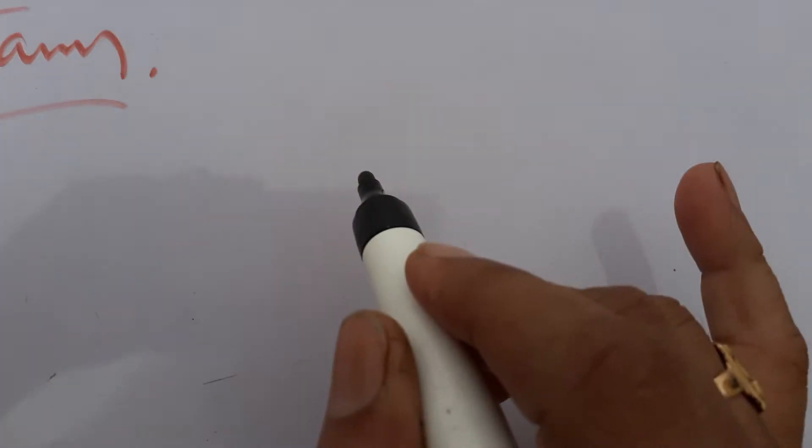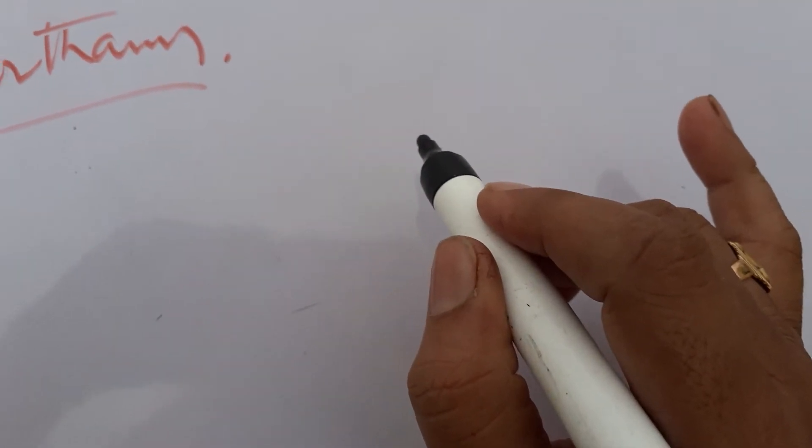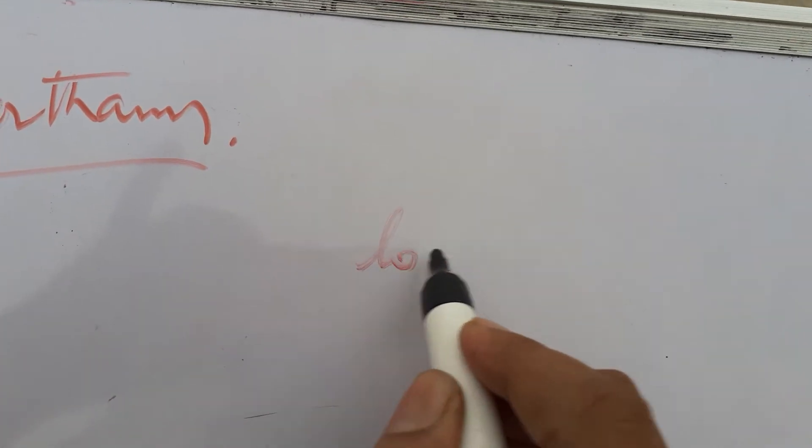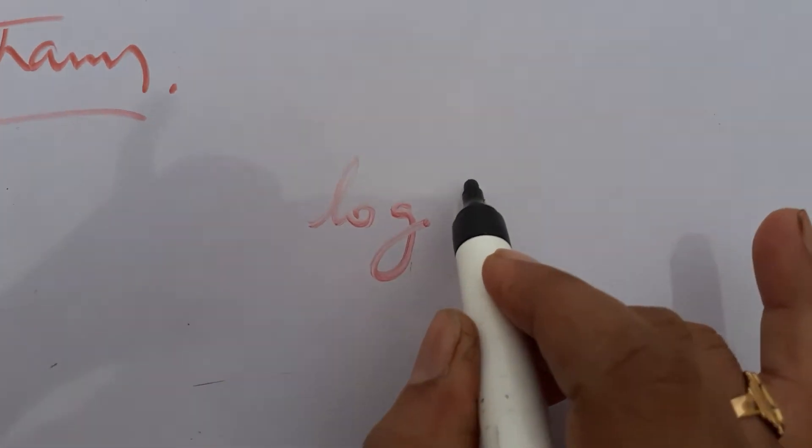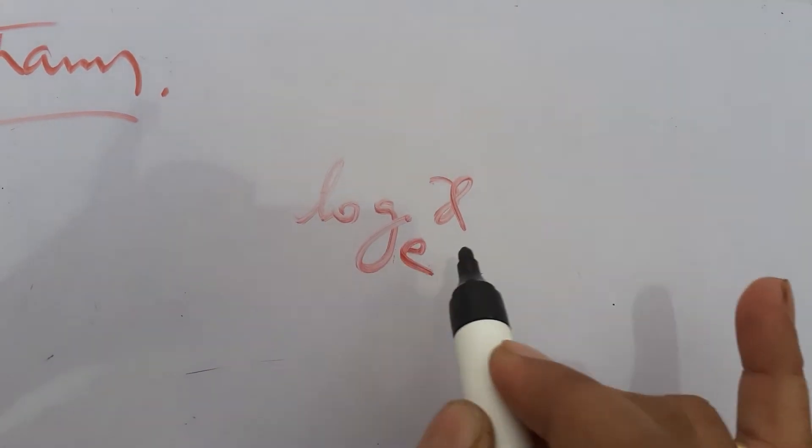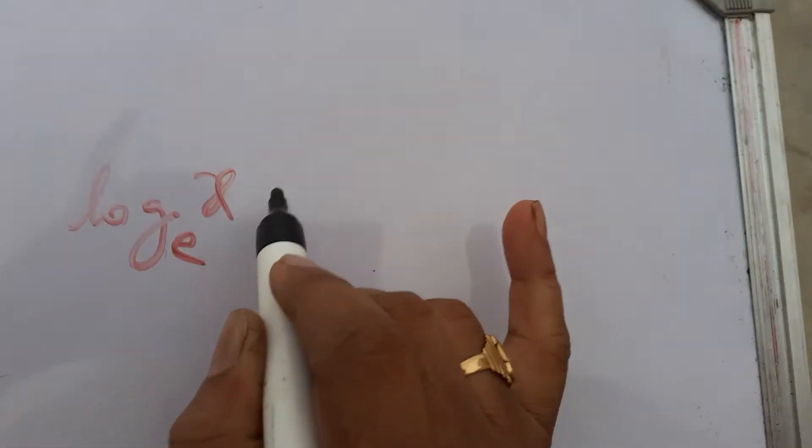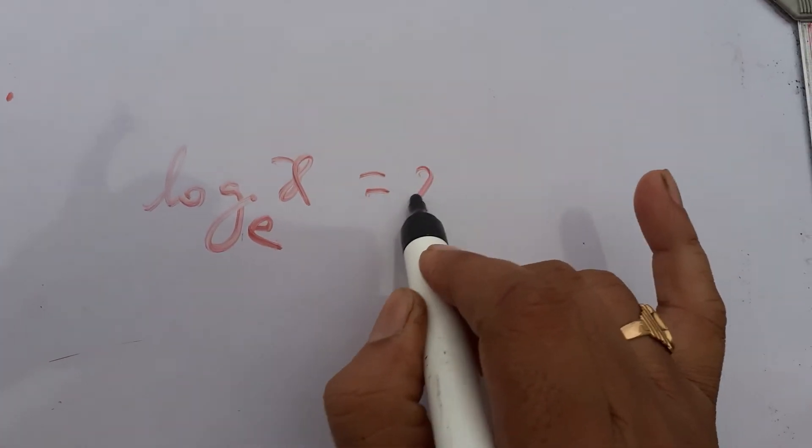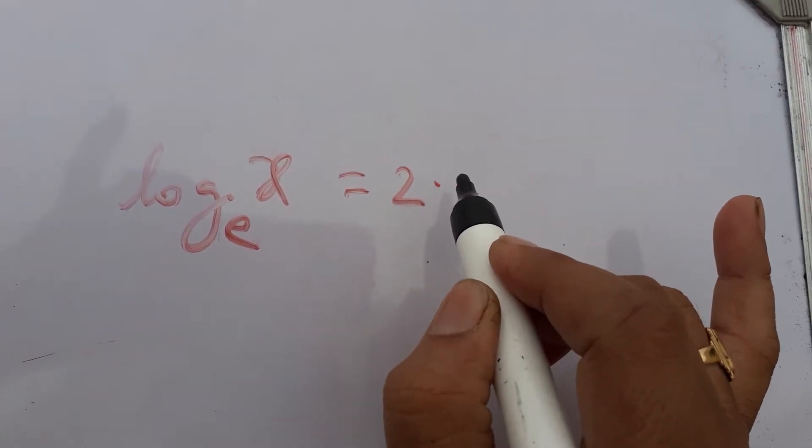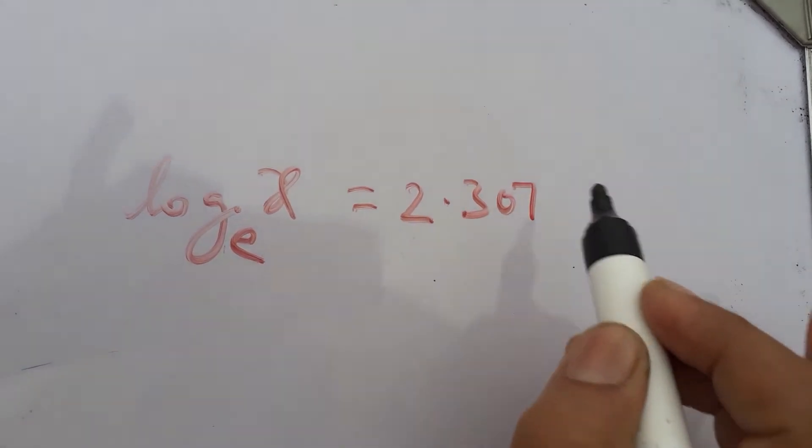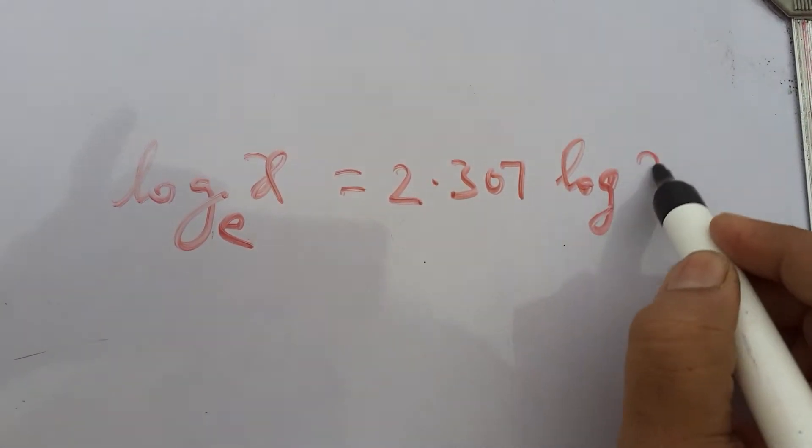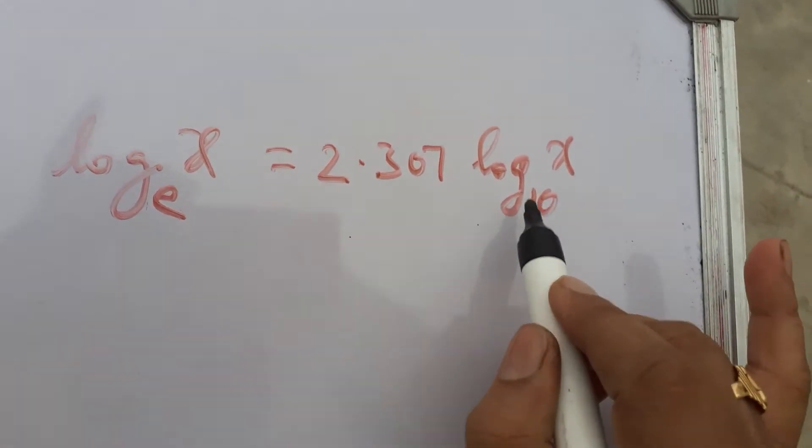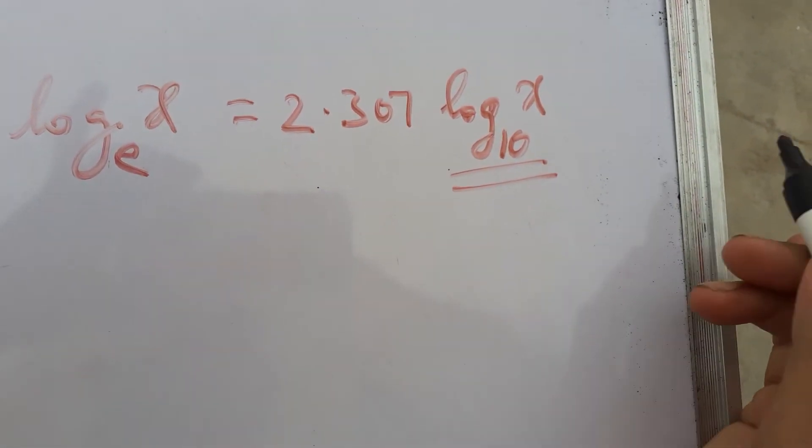In problems we get log base e. So how to convert base e into base 10? For example, log x base e - you want to convert to log x base 10. For that you have to multiply with 2.307 into log x base 10. Then log x base 10 you can find in logarithm books also.